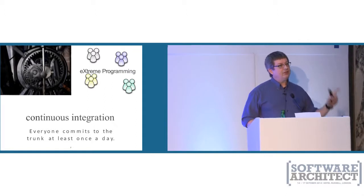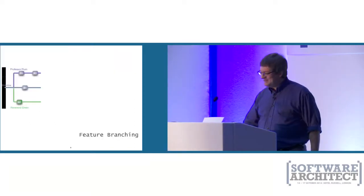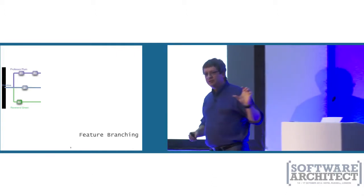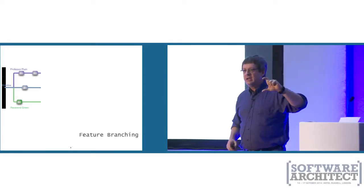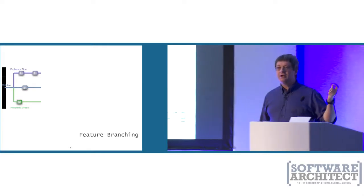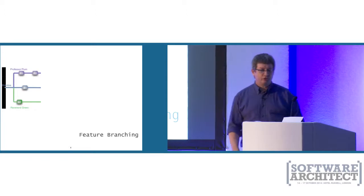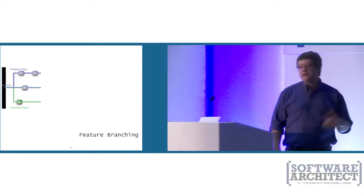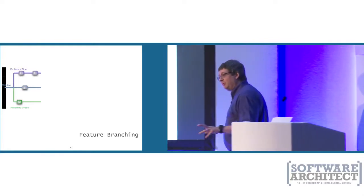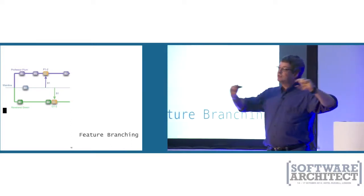In many ways we've lost the original intent — that everyone commits to the trunk at least once a day. Let me give you an example of how projects have inadvertently strayed from this good advice. Say you have a feature you may or may not want in the next release, so you decide to use branches in version control to model this problem. This is feature branching — using branching to handle speculative in-flight features while main development continues on trunk. Professor Plum picks one in-flight feature, Reverend Green picks the other.